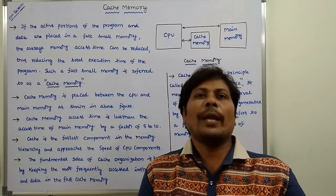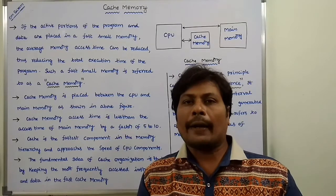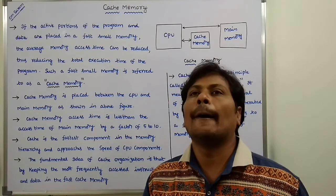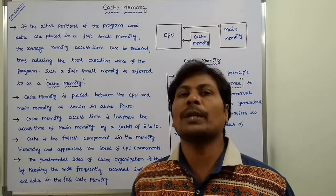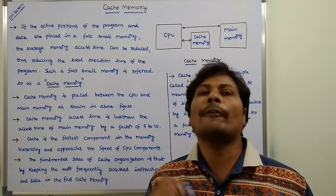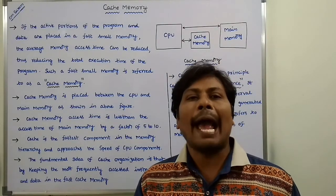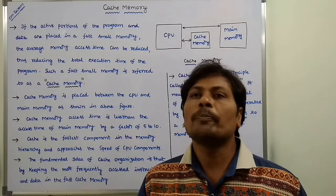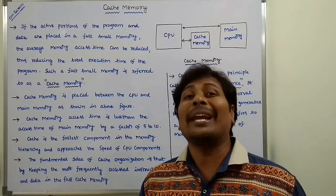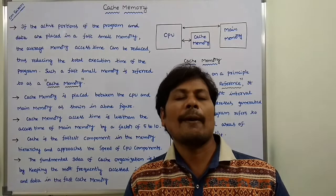Today I am giving a lecture on cache memory in computer organization and architecture. It is one of the most important types of memory in computer organization and architecture. Cache memory is one type of memory in the memory hierarchy. The capacity of cache memory is very low, the access time is low, and the accessing speed is high. These are the characteristics of cache memory.